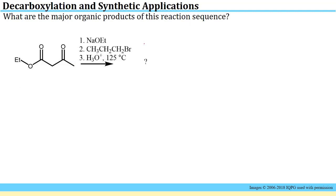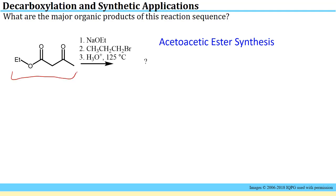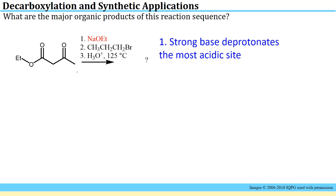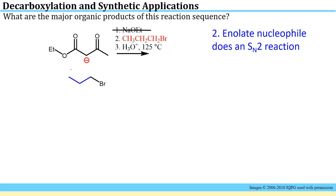There are two industrially important applications involving decarboxylation discussed in the primer. The first is an acetoacetic ester synthesis — here is your acetoacetic ester. Step one: sodium methoxide is a strong base that deprotonates the most acidic site. The most acidic position is alpha to both carbonyl units, making it far more acidic than the position alpha to only the ketone. So we generate this enolate in step one.